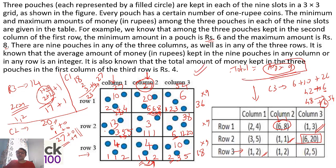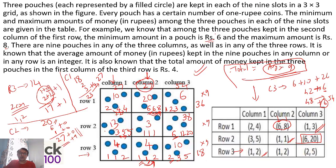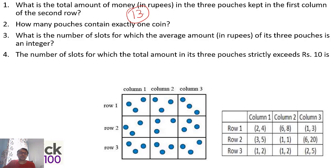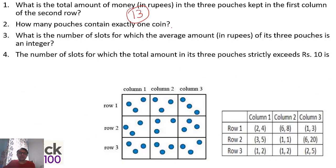The key insight was that each row and column total must be a multiple of nine. Now answering the questions: What is the total amount in the three pouches in first column, second row? Looking at the table, the total is 13. For how many pouches contain exactly one rupee coin: we have two here, three here — five — then two more and one — totaling eight pouches with one-rupee coins.